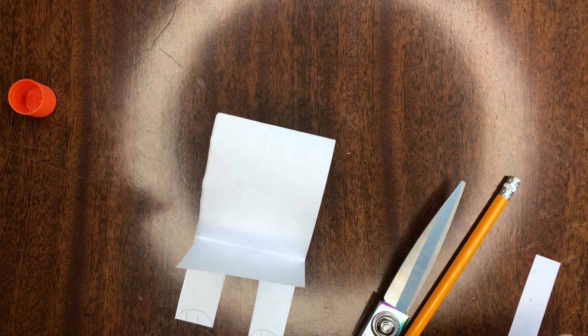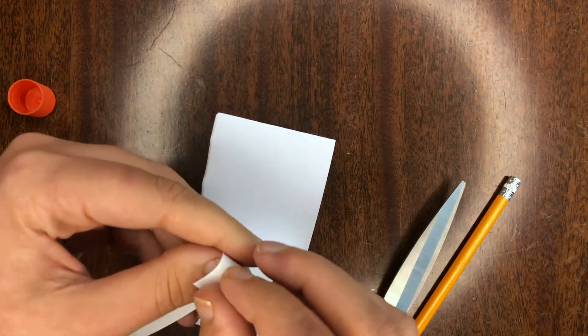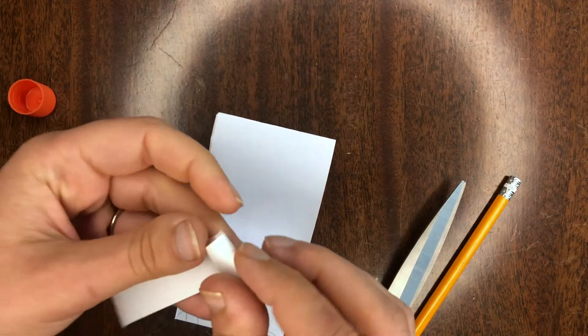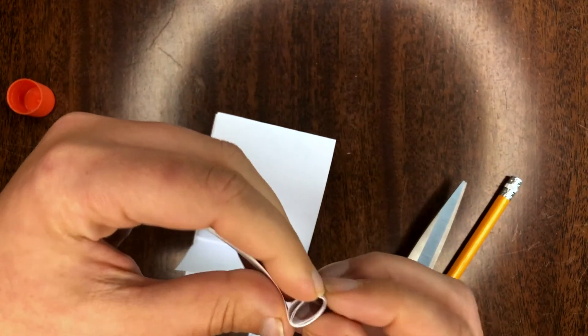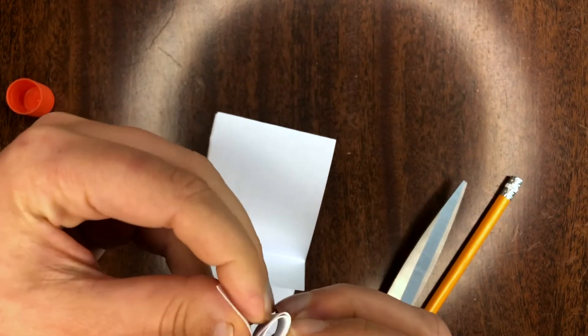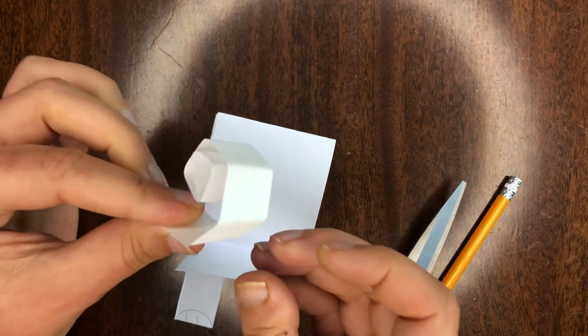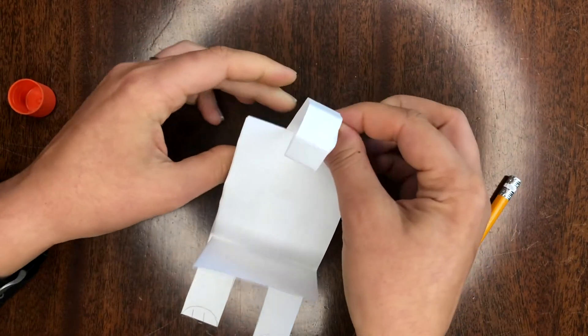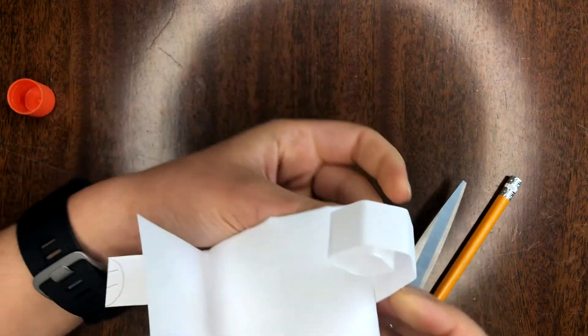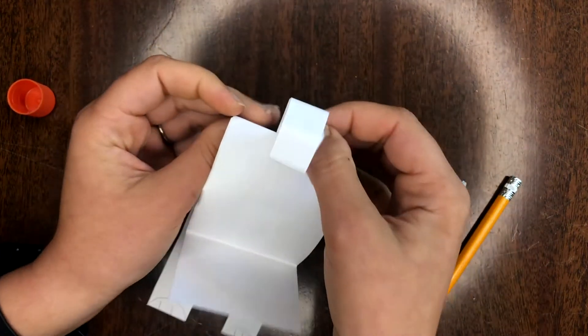And now we're gonna go ahead. We're gonna take our tail. We're gonna curl it up. We're gonna roll it. And then we're gonna put our glue on that side till we have our cute little tail.